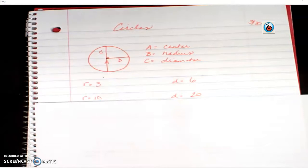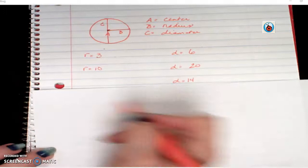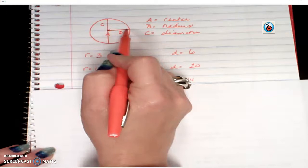Let's suppose I have the diameter, and I tell you the diameter is 14. Well, the diameter goes all the way across, what would the radius be? That would be half of it, so you'd get 7.